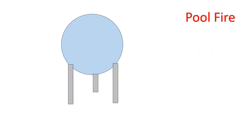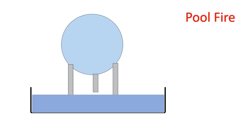Similarly, in the same vessel, if the leakage is contained within the dike or some area and during the leakage it does not ignite, it accumulates to create a pool of flammable liquid and later on gets ignited to create fire. This kind of fire is called a pool fire.